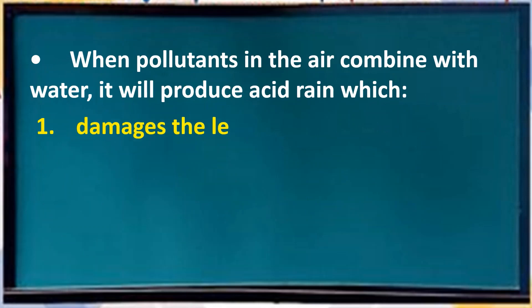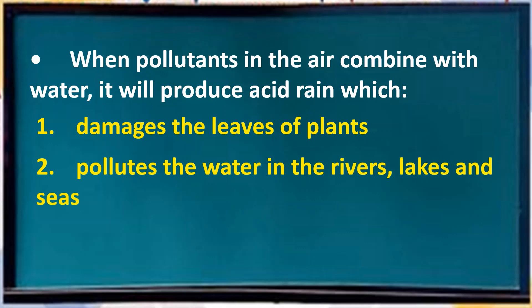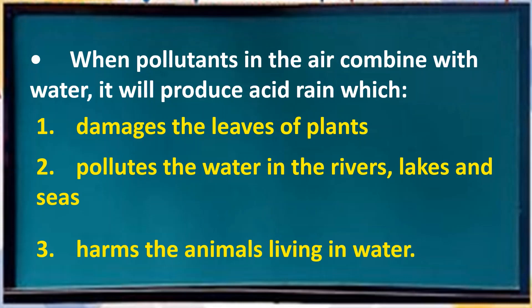When pollutants in the air combine with water, it will produce acid rain, which damages the leaves of plants, pollutes the water in the rivers, lakes, and seas, and harms the animals living in water.